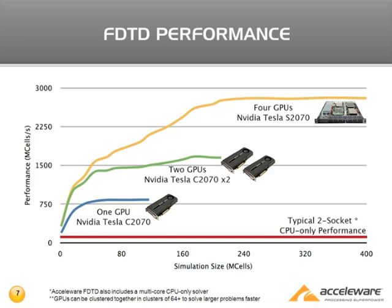We've put a red reference line showing the CPU-only performance, meaning running exclusively on a two-socket motherboard with two processors. The blue line shows the performance with one GPU — the C2070 from NVIDIA — where our library achieves a throughput of about 750 mega-cells per second, compared to 100–200 mega-cells per second CPU-only, showing a multiplier of about 5x.